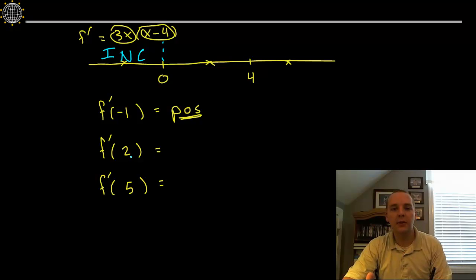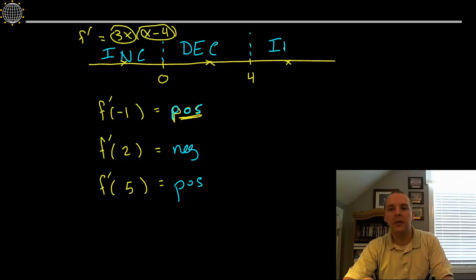Let's plug in 2, 3 times 2 is 6, that's positive. 2 minus 4 is negative 2. I see that I have a positive times a negative, that will give us a negative indicating in this little interval our function is decreasing. And if you plug in a 5, you get a positive times a positive indicating this is positive and your function is increasing.